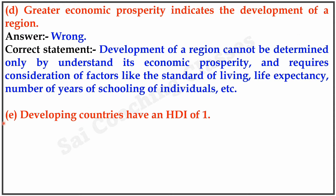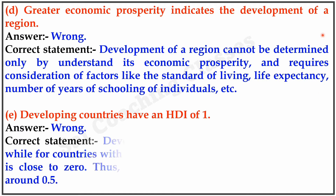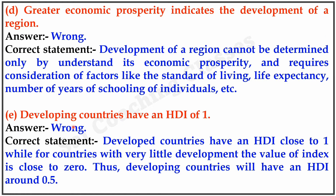E. Developing countries have an HDI of 1. Answer: Wrong. Correct statement: Developed countries have an HDI close to 1, while for countries with very little development, the value of the index is close to 0. Thus, developing countries will have an HDI around 0.5.